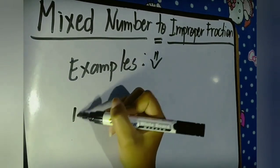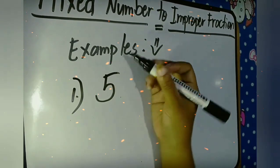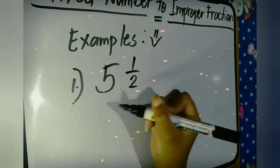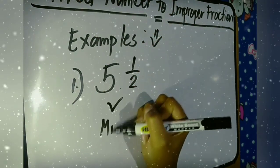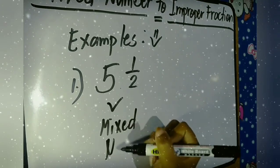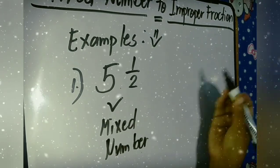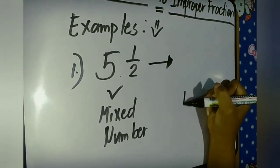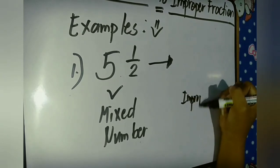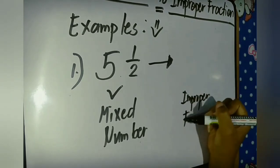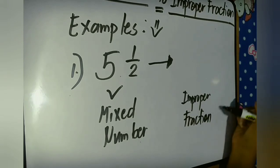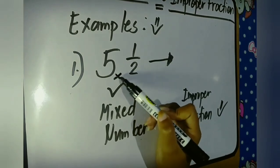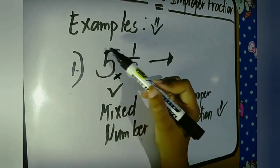Example number one: five and one half. It is a mixed number, and what we're going to do is to rewrite this mixed number into an improper fraction. The rules are very simple. The first thing you're going to do is multiply the denominator two times the whole number five.